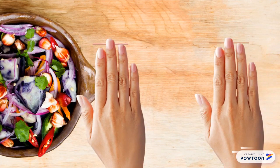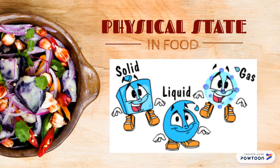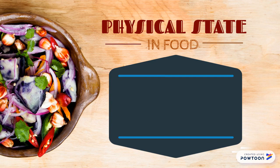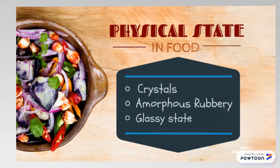The three basic physical states in food are solid, liquid, and gaseous. Besides that, there are some other physical states of food in terms of ingredient mobility, which are crystals, amorphous rubbery, and glassy state.